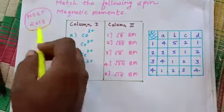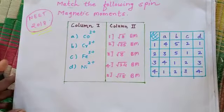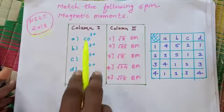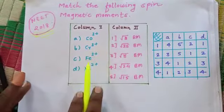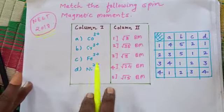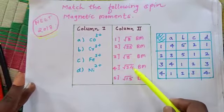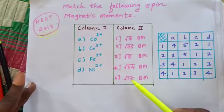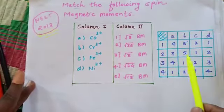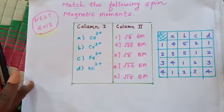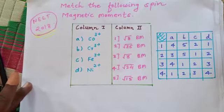The question is about four ions: cobalt 3 plus, chromium 3 plus, Fe 3 plus, nickel 2 plus. Match them with square root of 8, square root of 35, square root of 3, square root of 24, square root of 15. These are the options a, b, c, d or you can say 1, 2, 3, 4.